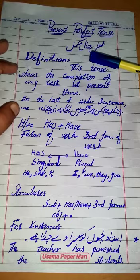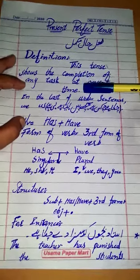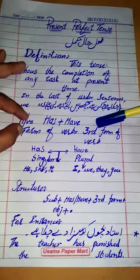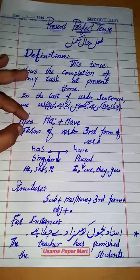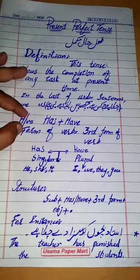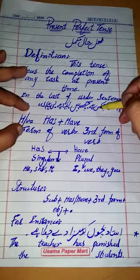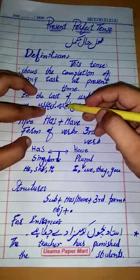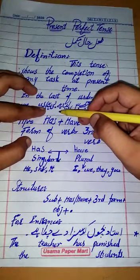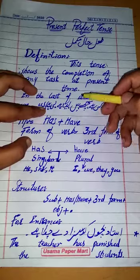In this tense, the work has recently been done. In Urdu sentences we use 'chuka hai,' 'chuki hai,' 'chuke hai,' and also 'liya hai,' 'li hai,' 'liye hai.' These are the two definitions of present perfect tense.